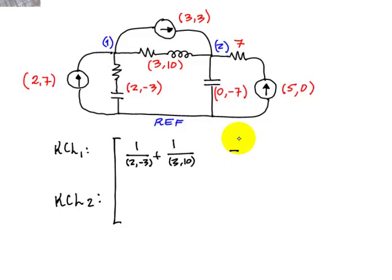It's going to be negative, and it's going to be the conductance between node 1 and node 2, which is 1 divided by (3,10). The symmetry forces this value to be repeated down here. We've seen that.